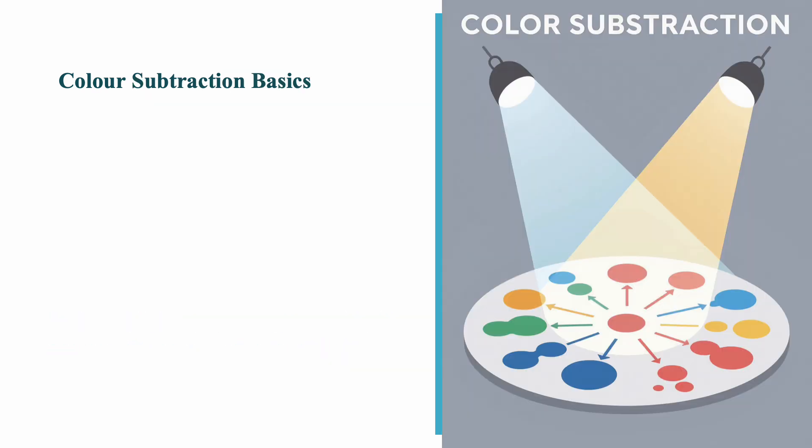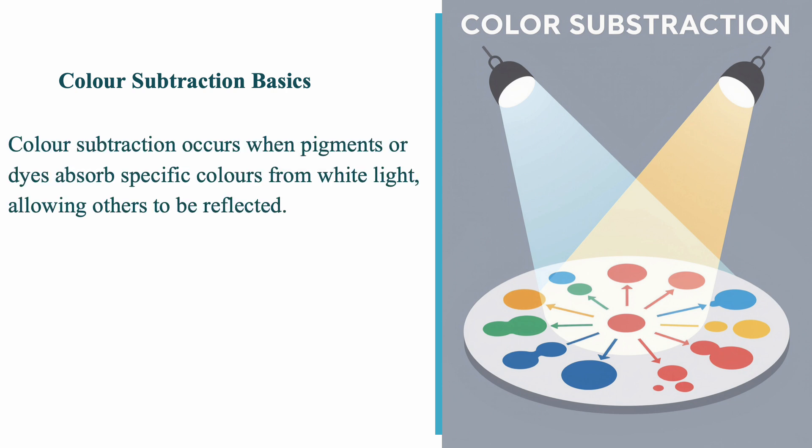Now let's talk about color subtraction. This happens when pigments or dyes absorb certain colors from white light and reflect the rest. The color you see is the reflected part. For example, yellow pigment absorbs blue light but reflects red and green. This principle is the basis of how paints, inks and dyes work. Unlike light mixing which adds brightness, pigment mixing makes colors darker because each pigment subtracts part of the spectrum.